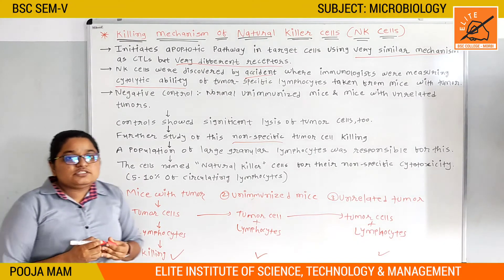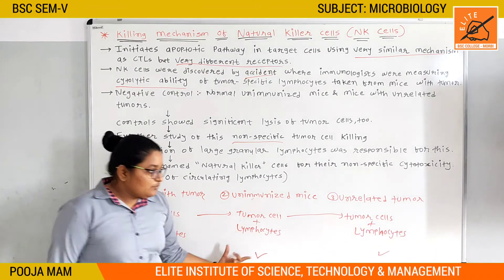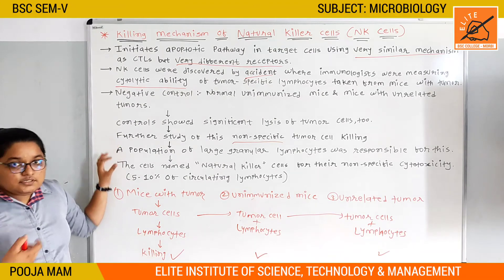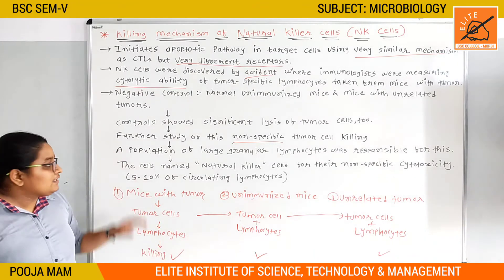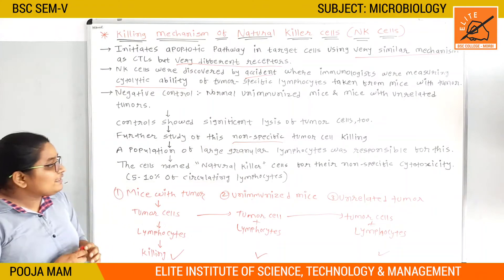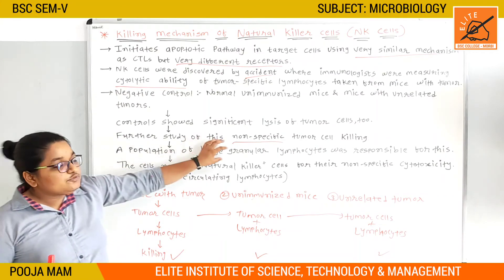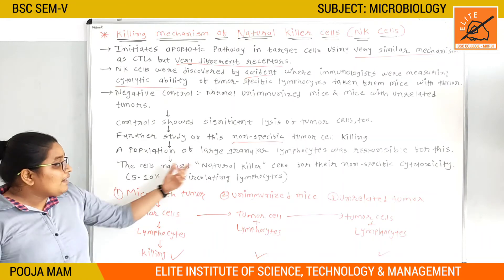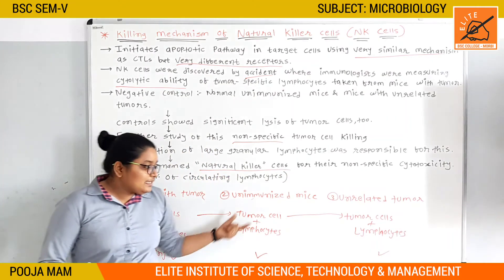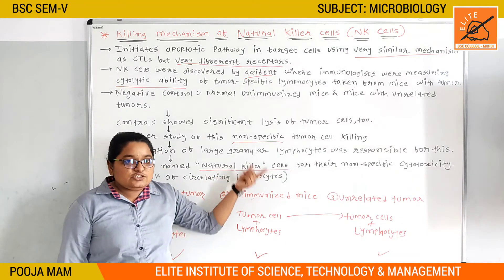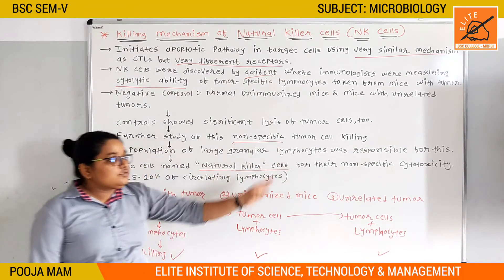It does not depend on which type of antigen is present. So this is a non-specific universal killing. It was found that a population of large granular lymphocytes was responsible for this non-specific cytotoxicity. This was the basis for naming them natural killer cells.